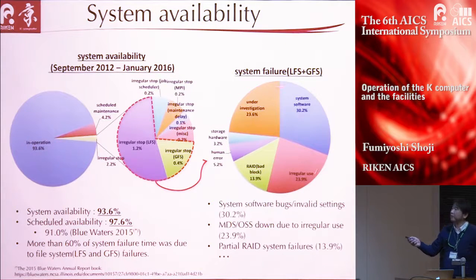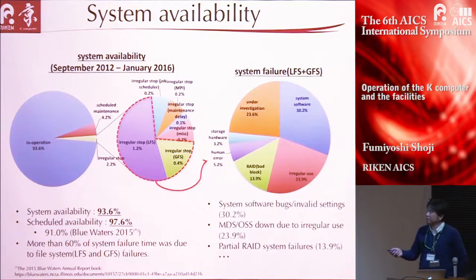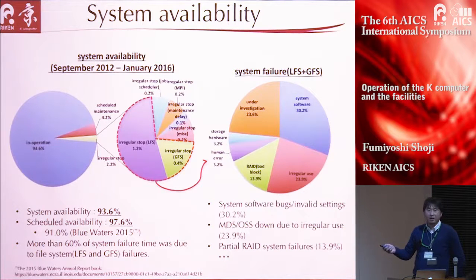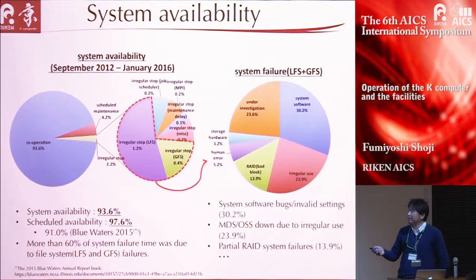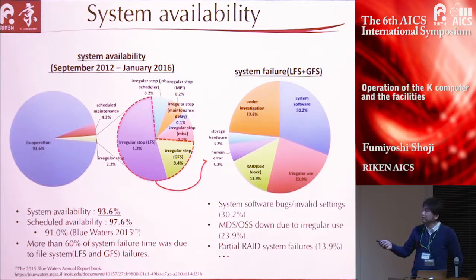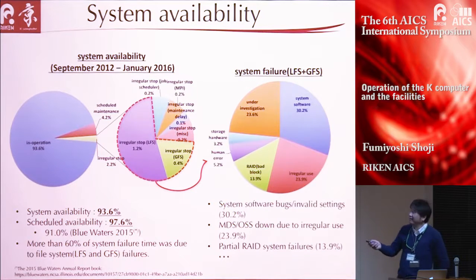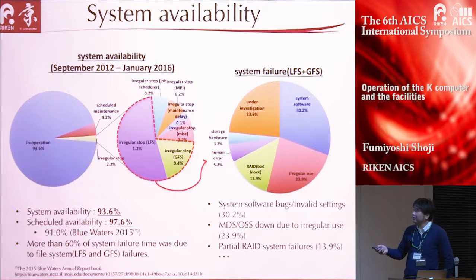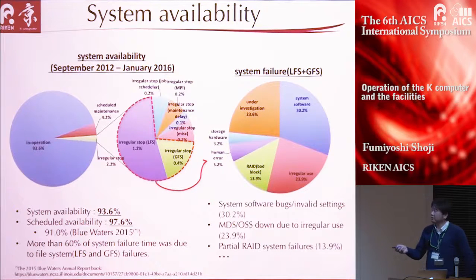Here is the breakdown of file system failures. System software bugs and invalid city contribute more than 30%, and the next cause is irregular use, followed by partial file system failure—what we call bad blocks—and so on.